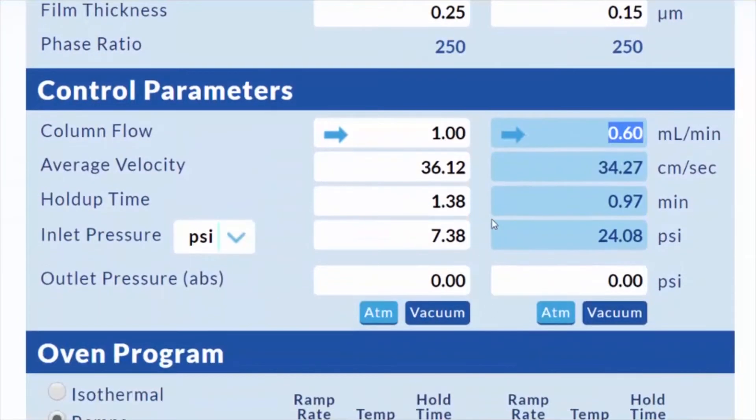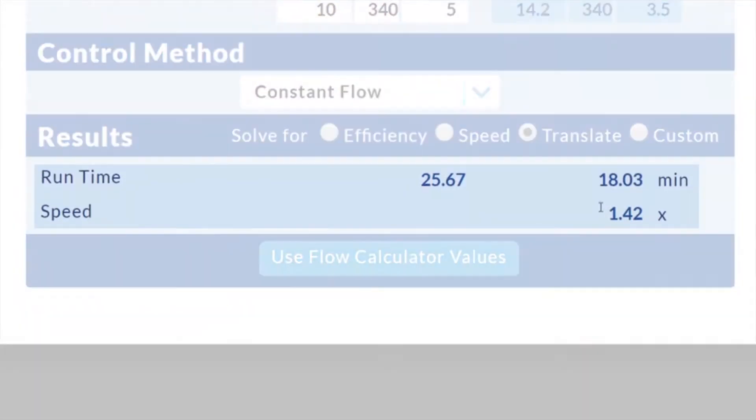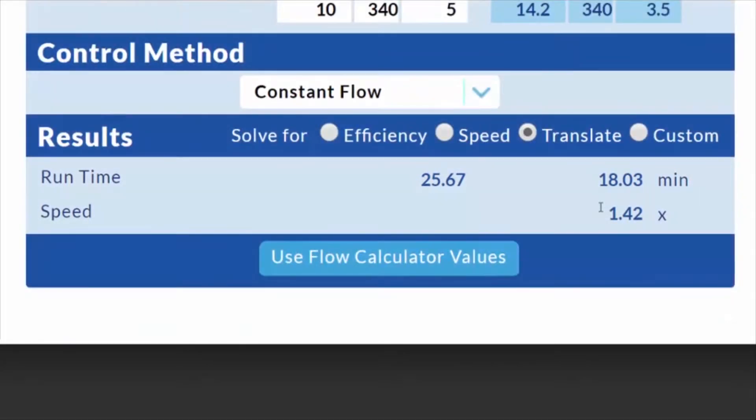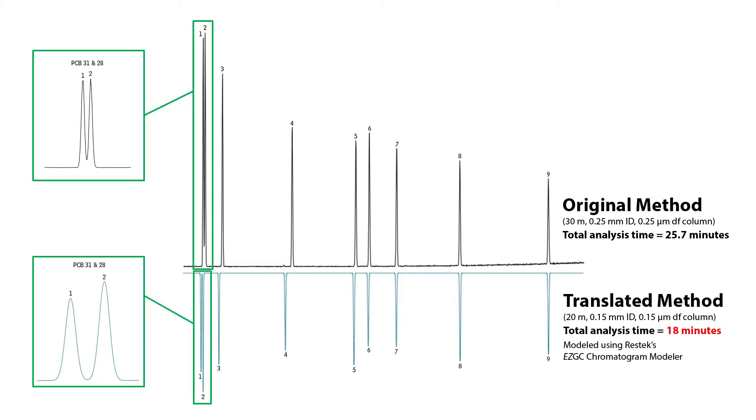Enter the new column dimensions and the Easy GC Method Translator will do the rest of the work by providing a new column flow and the subsequently calculated flow-related parameters and new oven ramp rates, giving you a shorter analysis time for the same separation on this scaled-down column you selected. In this example, we're seeing a savings of almost eight minutes, almost 30% in analysis time.